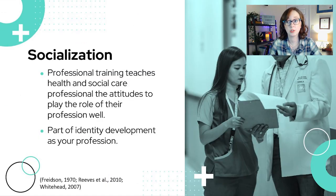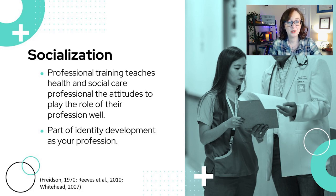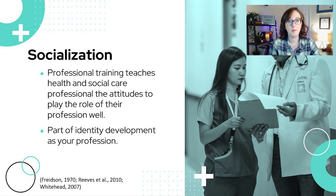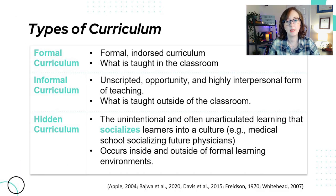Professional training teaches health and social care professionals the attitudes expected to play the role of their profession well — this is part of identity development. When talking about socialization, our article by Cynthia Whitehead also brought up the idea of hidden curriculum. From a sociological perspective, there are three types of curriculum: formal, informal, and hidden. Formal curriculum is what's formally in the curriculum — what we're supposed to be teaching, the actually endorsed curriculum, largely taught in classrooms — for example, anatomy and physiology lectures.